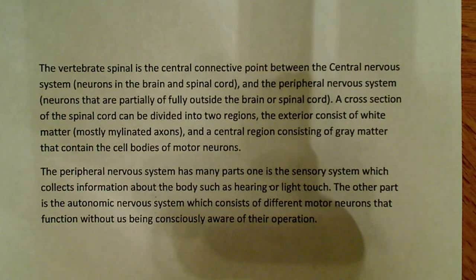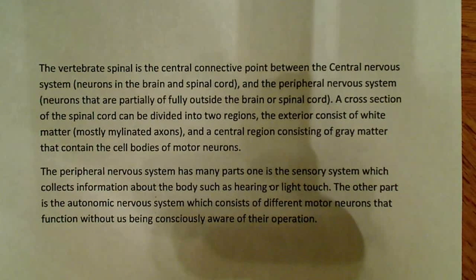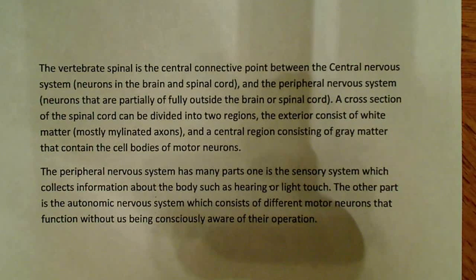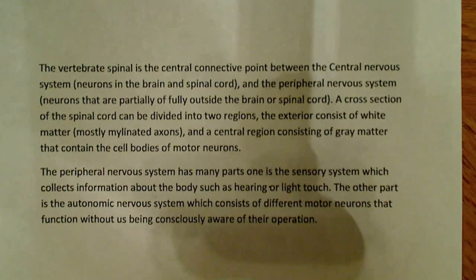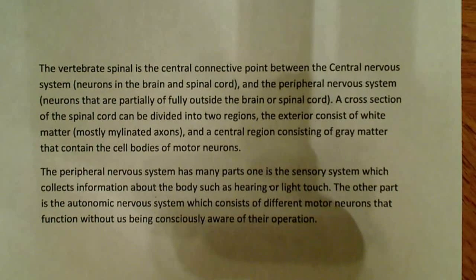The peripheral nervous system has many parts. One is the sensory system, which collects information about the body — things like hearing and touch. The other major part is the autonomic nervous system, which consists of motor neurons that function without us being consciously aware of their operation. For example, digestion and the muscles involved in the stomach and intestines fire without any conscious thought.